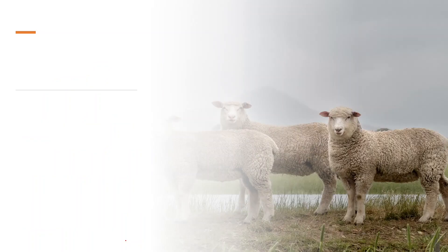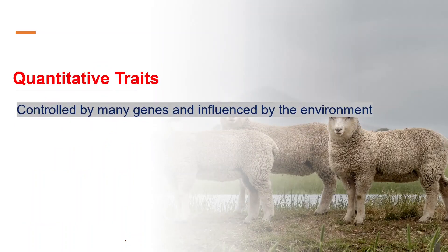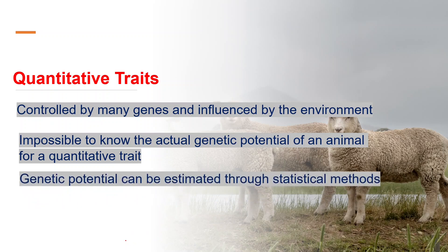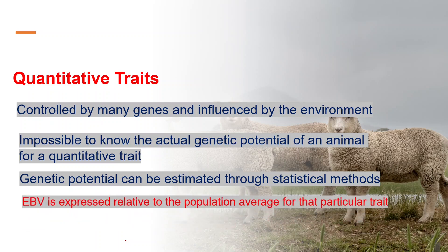Quantitative traits are those traits that are controlled by many, many genes and also influenced by the environment. Due to this reason, it is impossible to know the actual genetic potential of an animal for a quantitative trait. However, we can make an estimate of it using different statistical methods. The estimated genetic potential is known as the estimated breeding value.